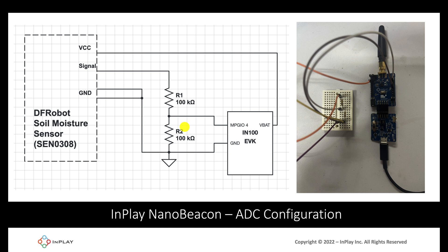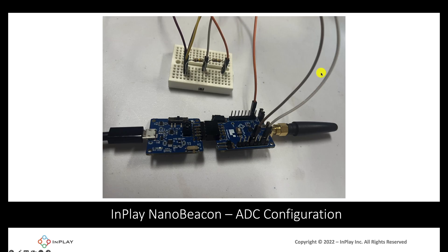The voltage between the two resistors is connected to MGPIO4, which is ADC channel 0. Ground is connected to the bottom of the resistor and to the ground connectors of the moisture sensor. The signal line from the moisture sensor goes to the first resistor in the line, and VCC is connected directly to VBAT on the IN100. The wire going to MGPIO4 reads at the connection between the two resistors.